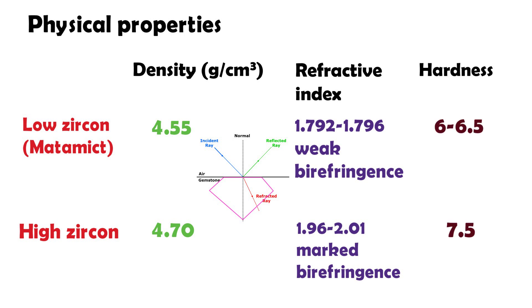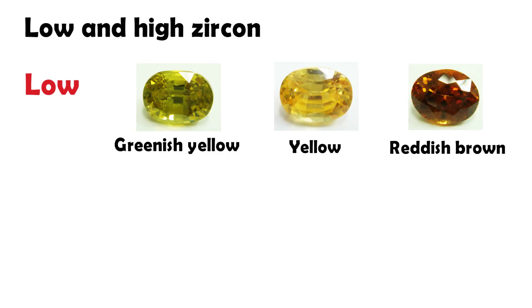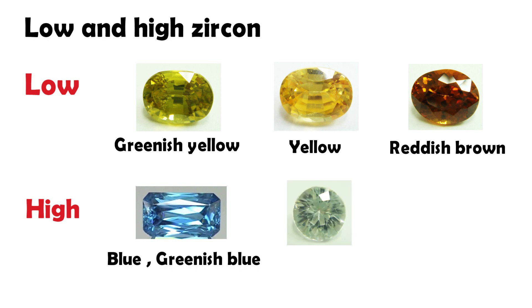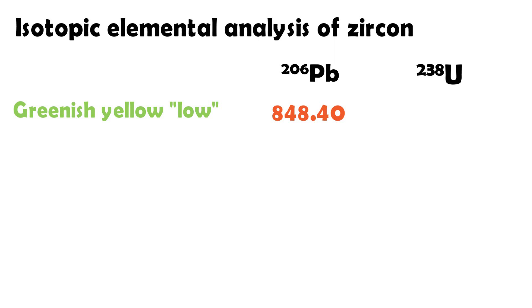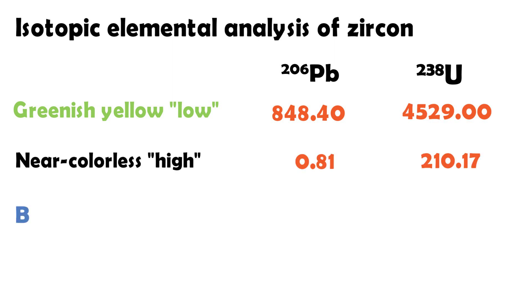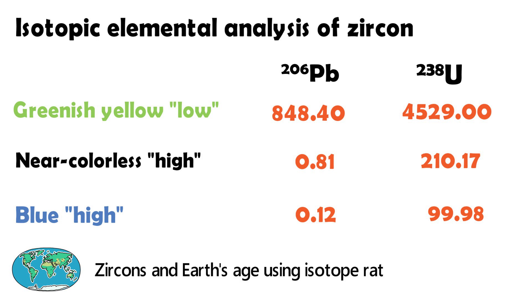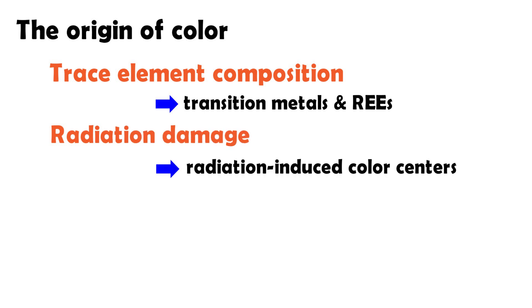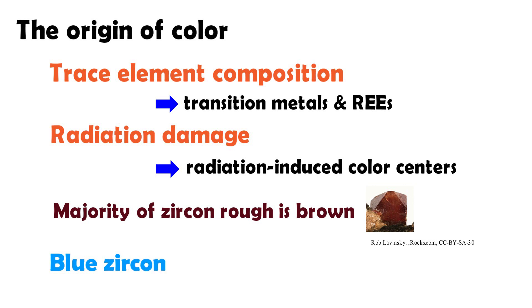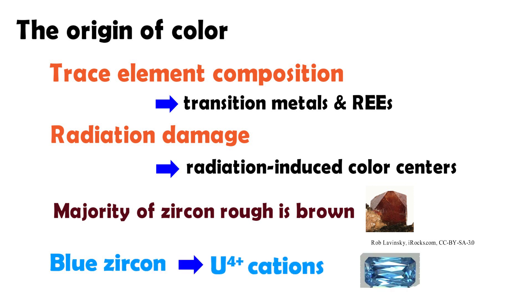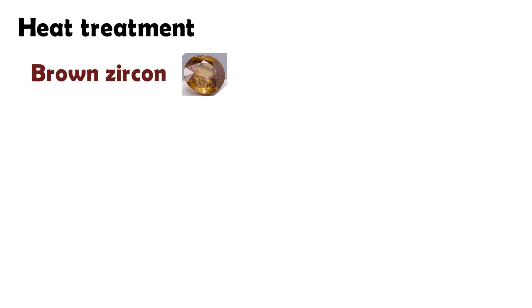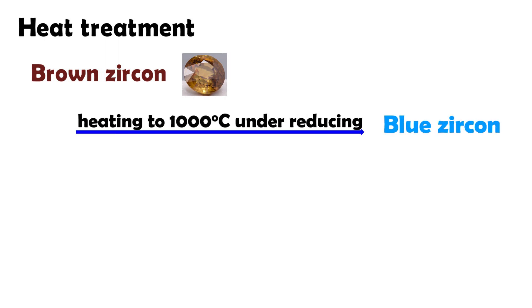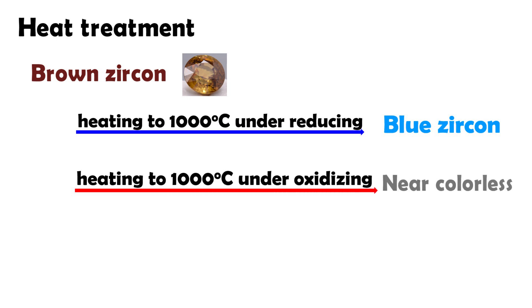Greenish yellow, yellow, and reddish brown are low-type Zircon, while blue, greenish blue, and colorless are high-type Zircon. High Zircon contains a smaller amount of uranium than the low type. You can also determine Zircon and Earth age using isotope ratio analysis by comparing the lead-to-uranium ratio. The colors of Zircon are caused by trace element composition and radioactive damage — the majority of natural Zircon is brown. Blue Zircon results from uranium cations and is produced by heating to 1000°C in a reducing environment, whereas near-colorless is produced at the same temperature in an oxidizing environment. Heating to 600°C in an oxidizing environment produces pale brown.